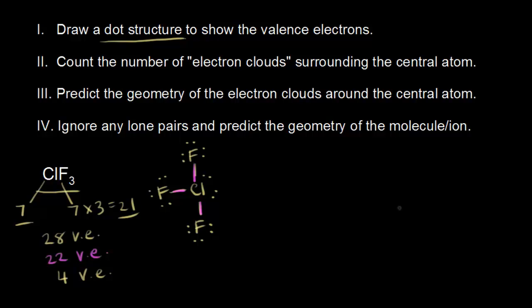Looking at the dot structure, chlorine is actually exceeding the octet rule, which is okay because of its position in the third period on the periodic table. If you assign a formal charge to that chlorine, you'll see it has a formal charge of zero, which helps make sense of the dot structure.